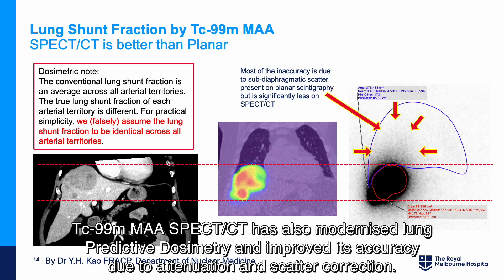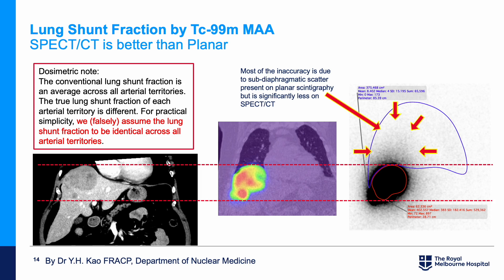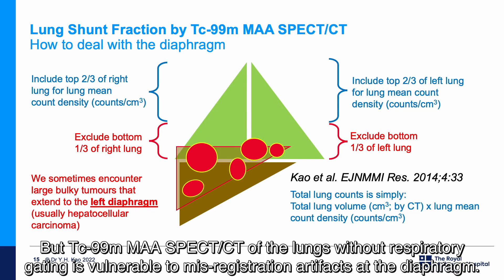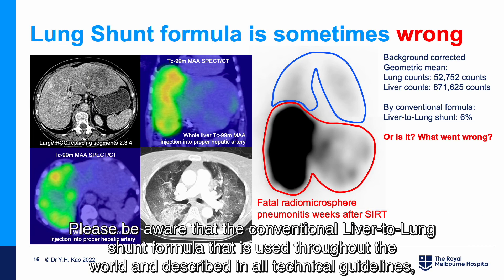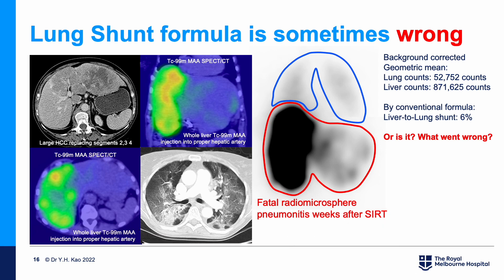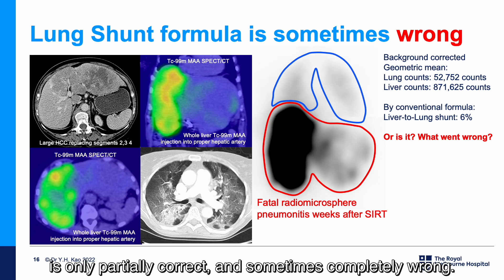MAA SPECT-CT has also modernized lung predictive dosimetry and improved its accuracy due to attenuation and scatter correction. However, MAA SPECT-CT of the lungs without respiratory gating is vulnerable to misregistration artifacts at the diaphragm. Please be aware that the conventional liver-to-lung shunt formula used throughout the world and described in all technical guidelines is only partially correct and sometimes completely wrong.